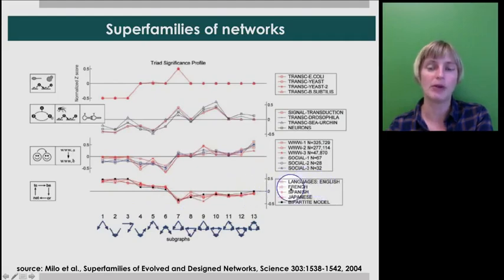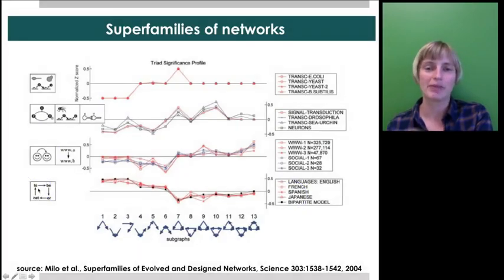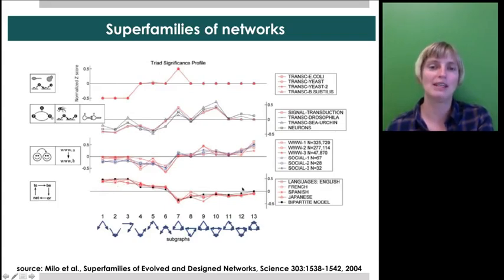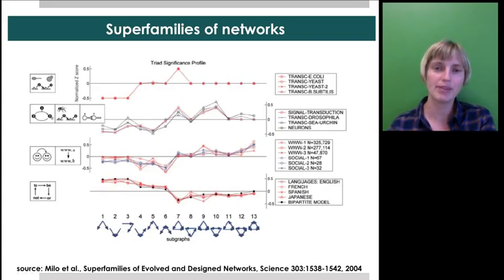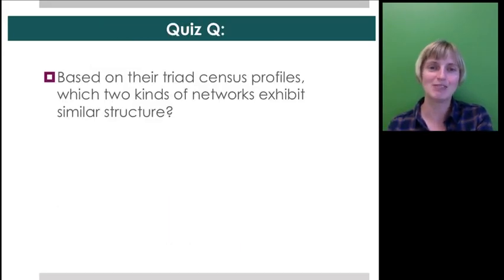And for example, language networks that have edges between words that occur adjacently in text, so to be or not to be, that's a lot of little four-cycle in there. Across different languages, the motif profile is very similar. So, your task is to find, based on their triad census profiles, which two kinds of networks exhibit similar structure.